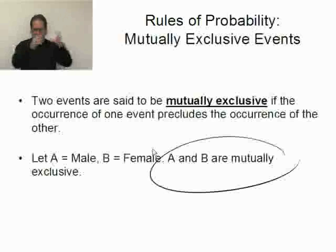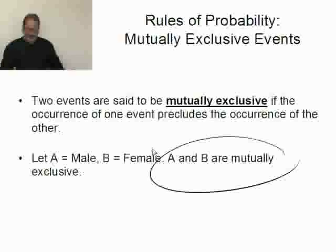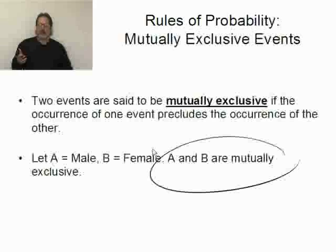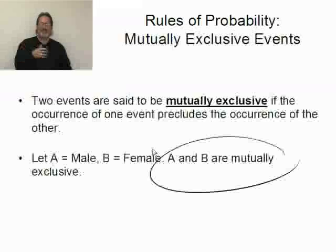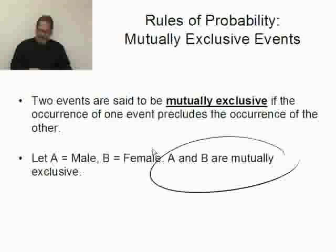They're not the same — they're either male or they're female. Think in terms of flipping a coin: event A is observe a head, event B is get a tail. Those are mutually exclusive; they cannot happen at the same time.